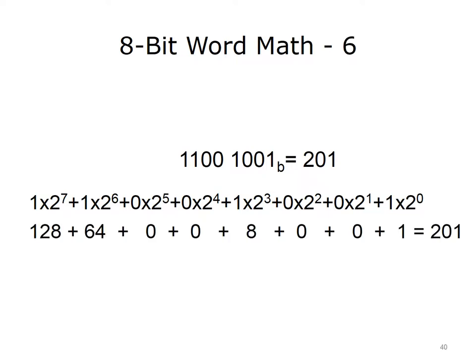Did you come up with the decimal number 201? The result is 128 plus 64 plus 0 plus 0 plus 8 plus 0 plus 0 plus 1 for a decimal equivalent of 201. If the answer did not match the solution, please pause the presentation and work until the answer matches the solution in the presentation.